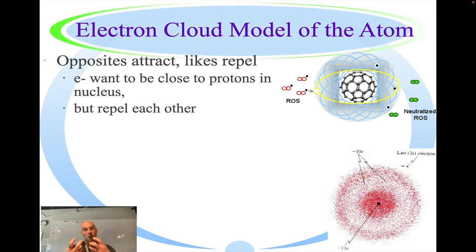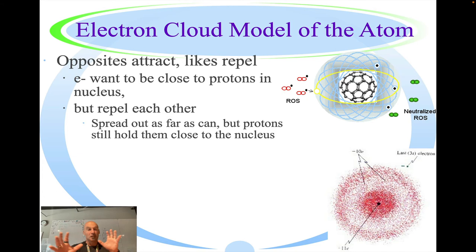But likes repel. So if you have two positives or two negatives, they are going to repel each other, again, just like magnets. So they spread out as far as they can, but the protons still hold them close to the nucleus.